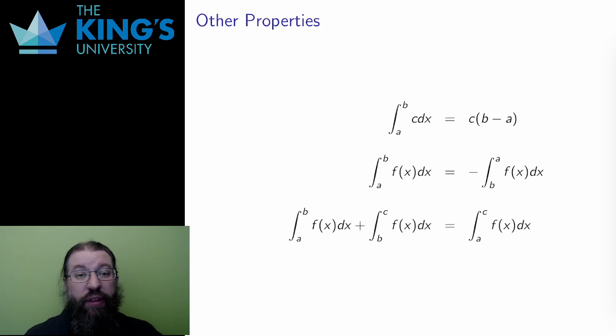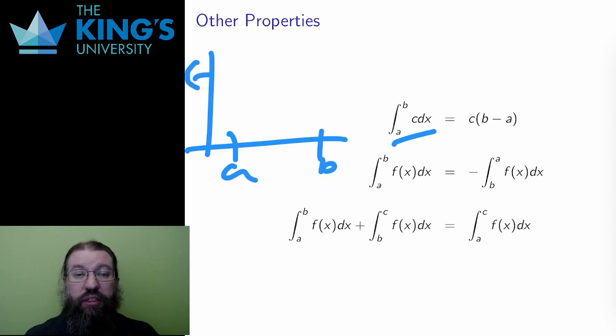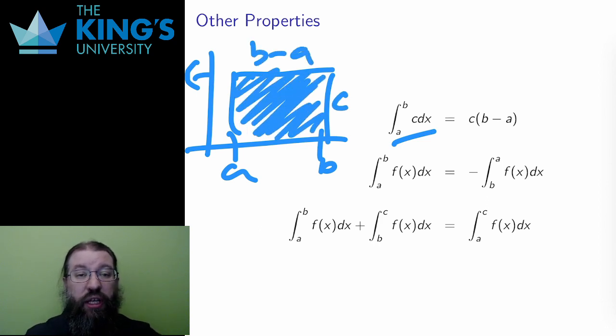In addition to linearity, there are a number of useful properties that I can argue for from the definition. First, what is the integral of a constant? Well, the area under a constant is the height of the function c, times the width of the interval b minus a. This is the rectangle, the constant velocity situation, that inspired the definition in the first place.